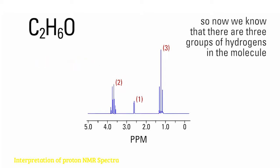So now we know that there are three groups of hydrogens in the molecule. One group has three equivalent hydrogens, one group has two equivalent hydrogens, and there is one single hydrogen as well.